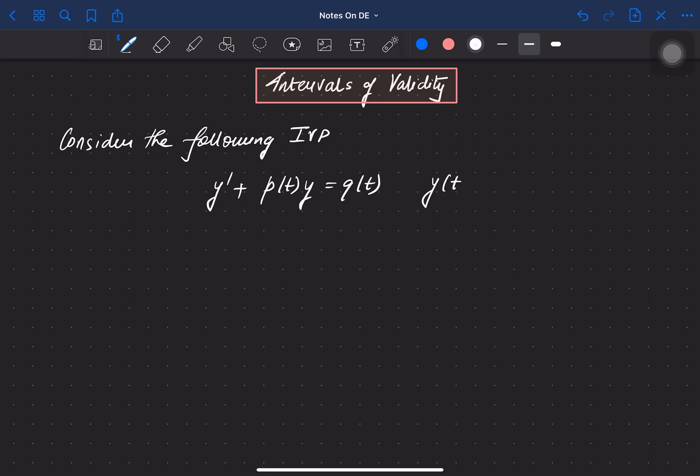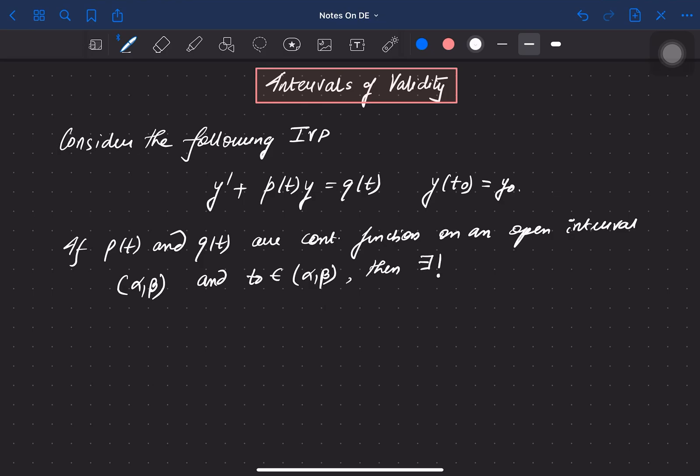The initial condition is given as y(t₀) = y₀. If p(t) and q(t) are continuous functions on an open interval (α, β) where t₀ belongs to this interval (α, β), then there exists a unique solution